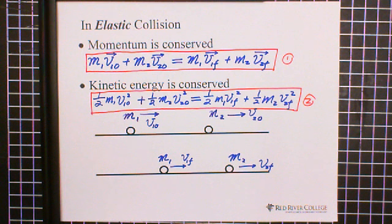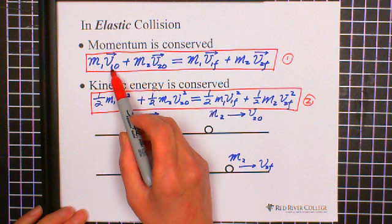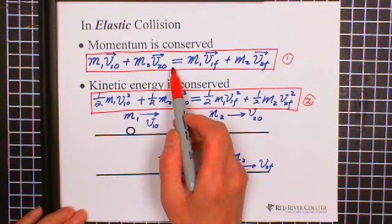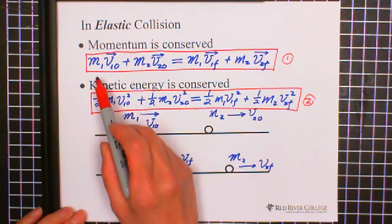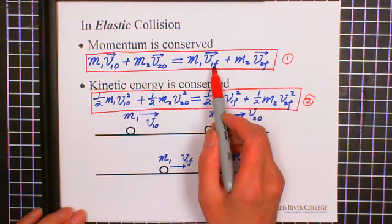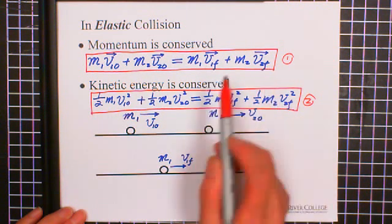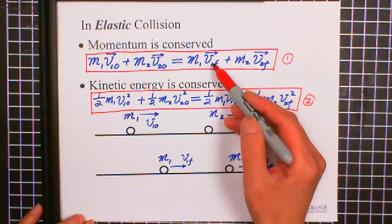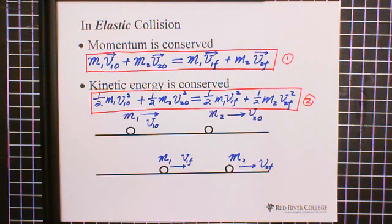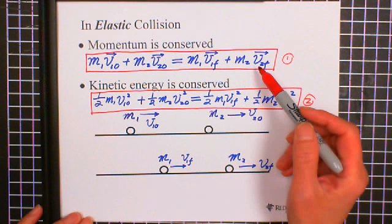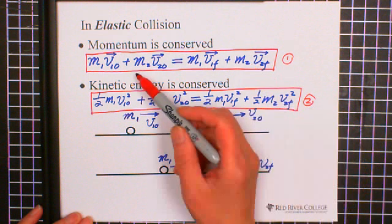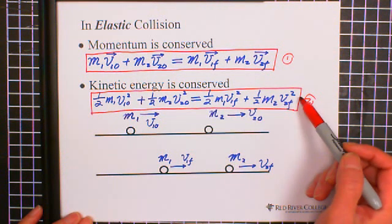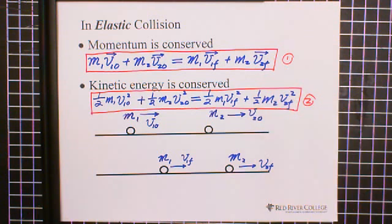The second equation is kinetic energy is conserved. To look for the final velocity, if you're given the initial velocity for both V1 initial, V2 initial, and M1 and M2, we're looking for the final velocity of both objects. So we have two equations, we solve two unknowns, V1 final and V2 final. But this is not a linear system equation. One is linear, the other is square, two degrees. That's why solving this equation is a little bit complicated.